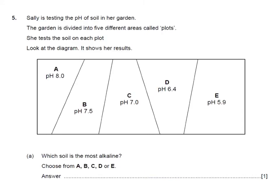Here's another question. Sally is testing the pH of soil in her garden. The garden is divided into five different areas called plots. She tests the soil on each plot. Look at the diagram, it shows her results. Which soil is the most alkaline? Well the most alkaline soil would be the one with the highest pH.